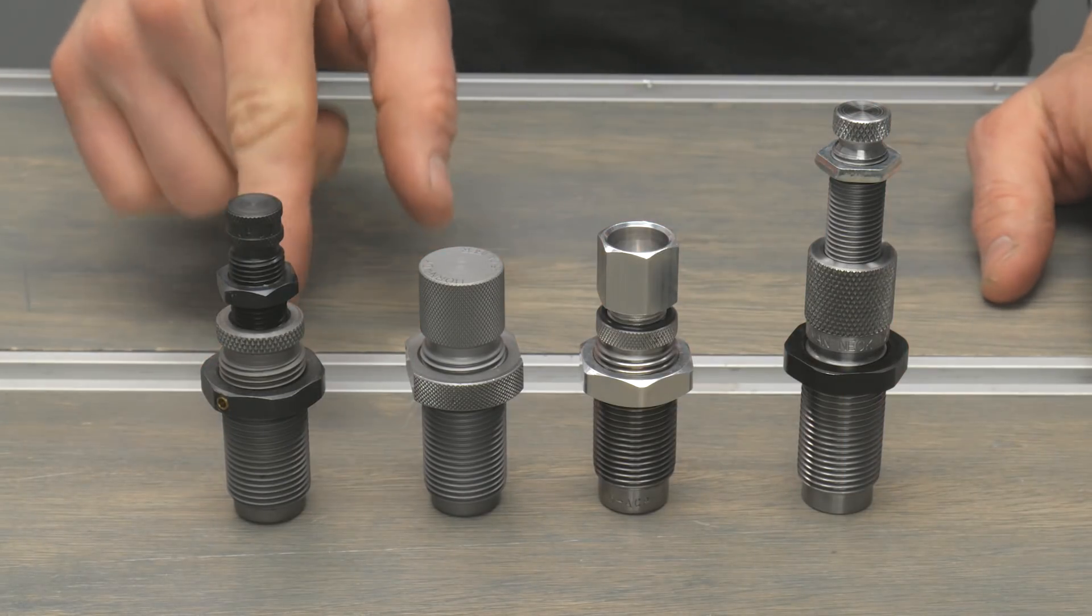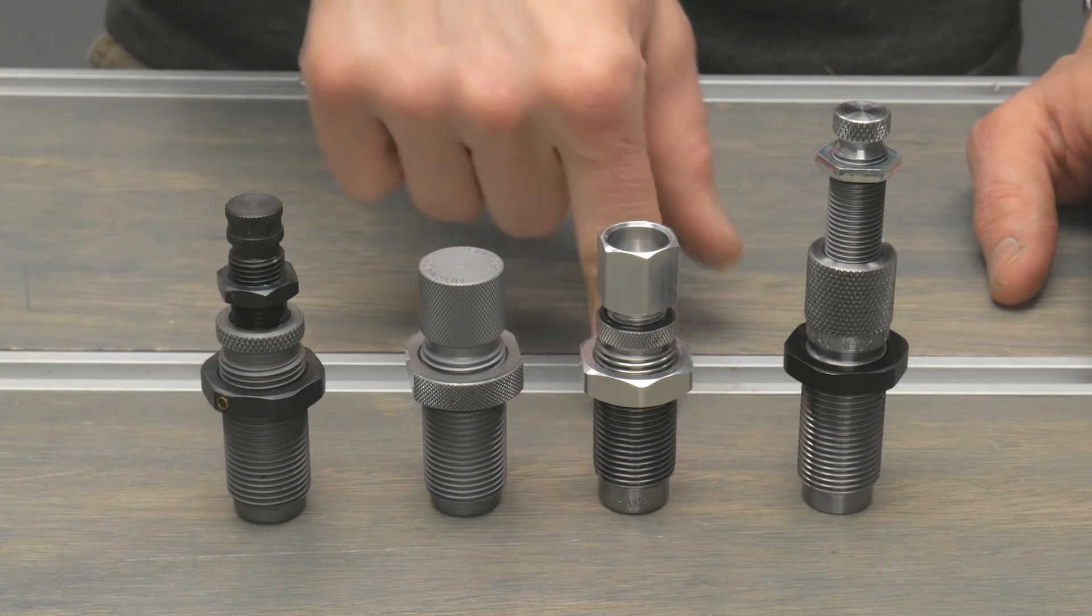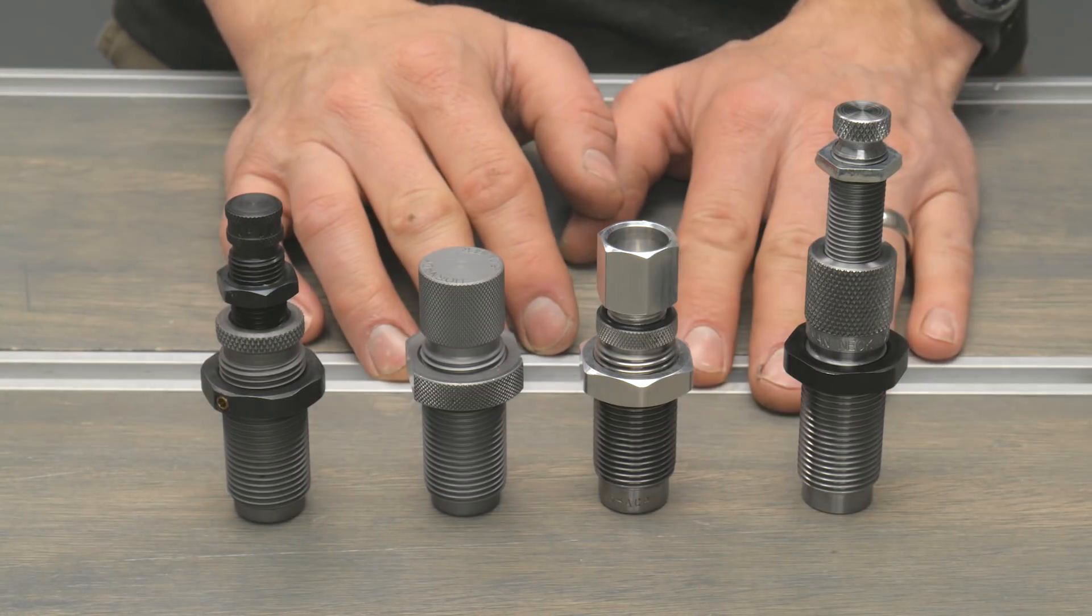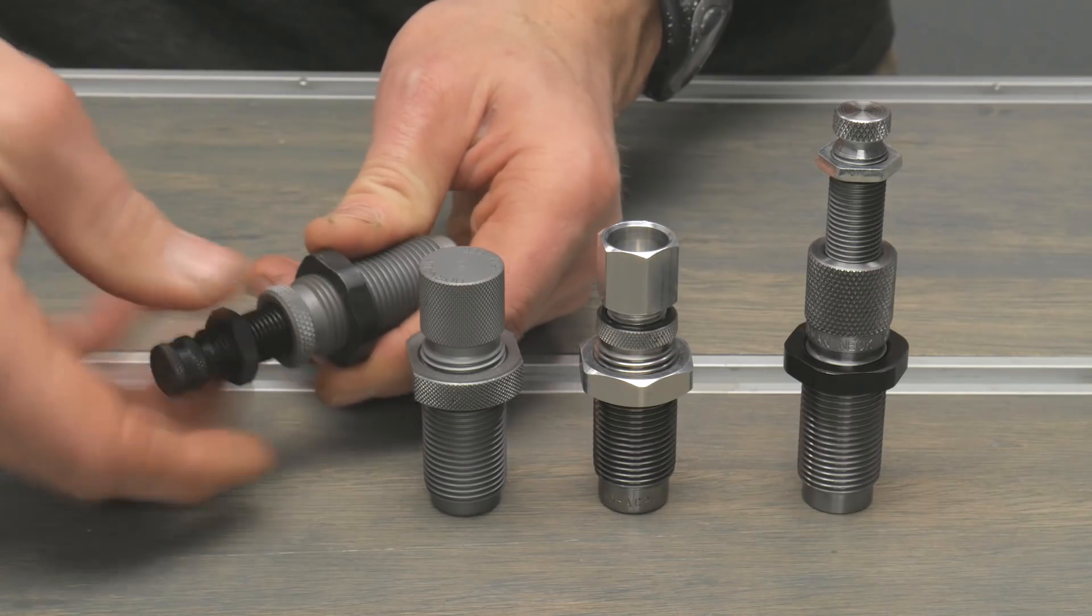So here is our lineup. We've got an RCBS expander, Hornady expander, a Lee expander, and a Lyman expander all side by side, all 45 ACP. Let's take a look inside the RCBS unit first.